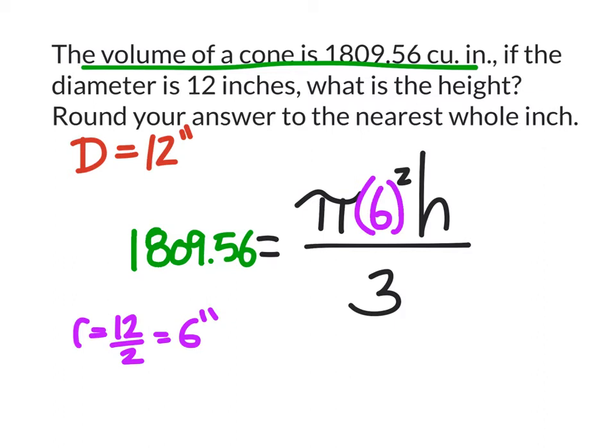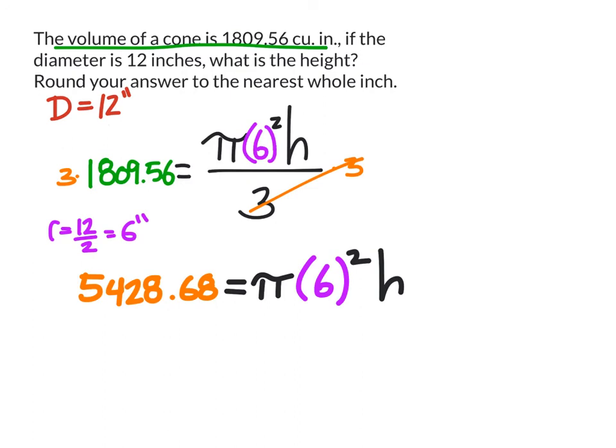I'm going to do this in two steps. I'm going to start by multiplying both sides of this equation by 3, which cancels out the divide by 3. So 3 times 1,809.56 equals pi times 6 squared times h. And 3 times 1,809.56 is 5,428.68. That orange number, 5,428.68, is the volume of what the cone would be with the same dimensions as a cylinder.